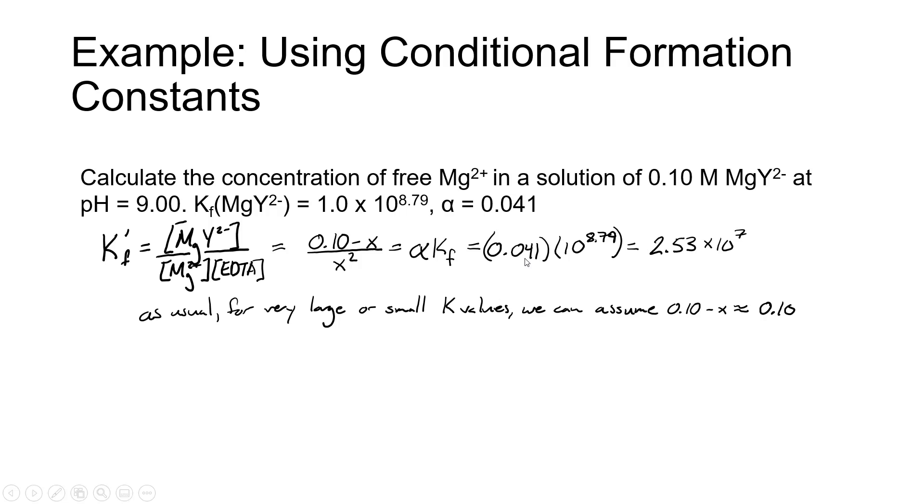The alpha value is 0.041. The formation constant is 10 to the 8.79. Make sure you're getting accurate numbers when you enter this on your calculator. If you're having trouble with your calculator syntax giving you a usable value for the formation constants, based on the values given in Harris table 12.2, that's a good thing to ask me about. 0.041 times 10 to the 8.79 is equal to 2.53 times 10 to the 7th. So this is the value of our conditional formation constant.